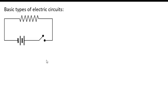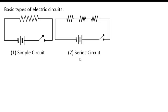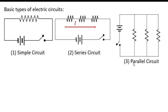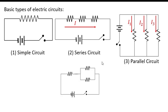These are the basic types of electric circuits. We have a simple circuit with its complete parts wherein you only have one load. We also have a series circuit wherein there are more than one load, and the flow of charges is only in one direction. We also have a parallel circuit wherein the flow of charges are in different directions or different paths. And it can be a combination of a series and parallel circuit.